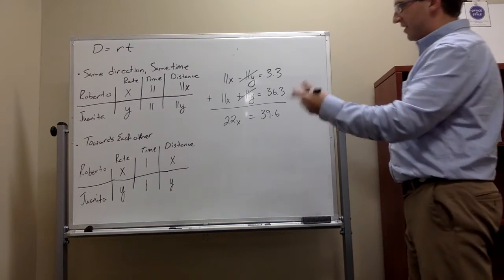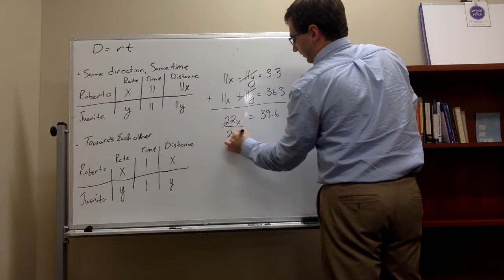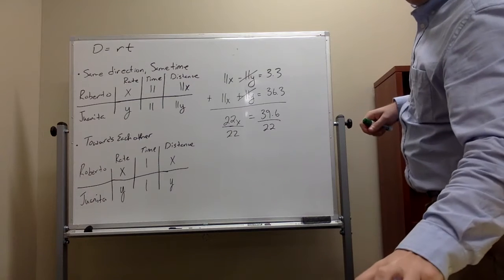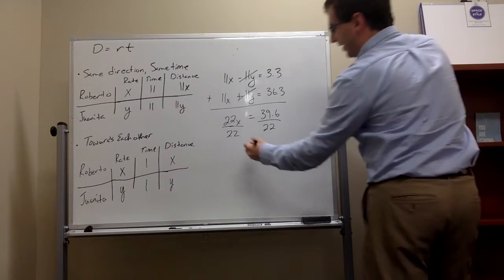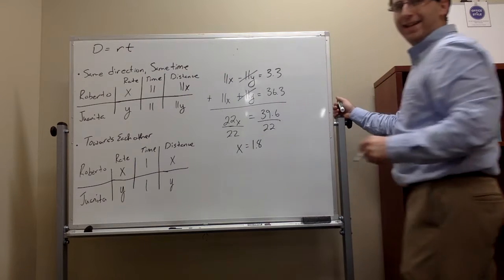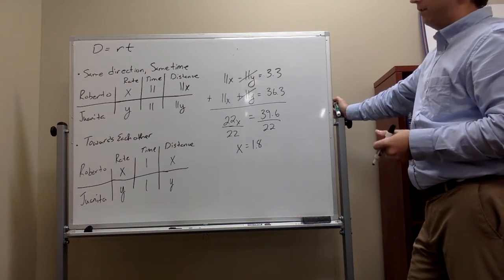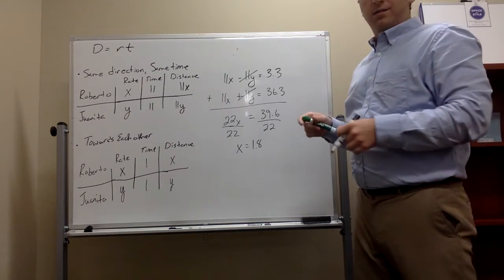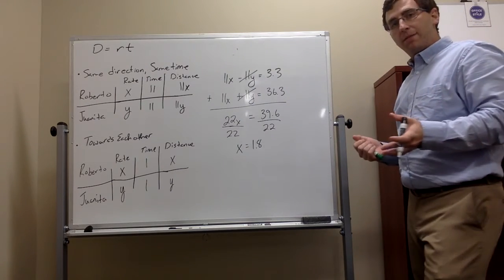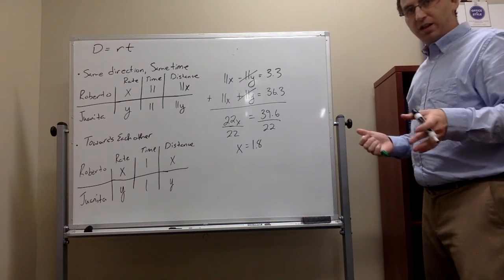So now what we've got to do, we've got to solve for x. We have to divide both sides by 22. So when we divide both sides by 22, we get an x value of approximately 1.8. So basically what we just found, we just found Roberto's speed. So basically he's going about 1.8 miles an hour, which that's pretty normal for a walking pace. That's kind of fast, but 1.8 miles an hour, that's pretty legit.